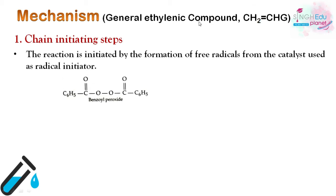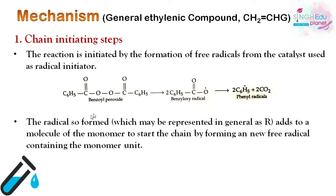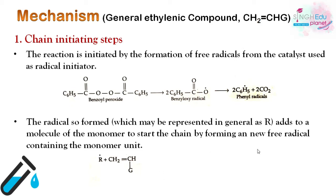We use benzoyl peroxide as the initiator. When heated, the O-O bond in benzoyl peroxide breaks to form benzoyloxy radicals. These then lose CO₂ to form phenyl free radicals. The radicals, generally represented as R•, then add to a monomer to start the chain by forming a new radical.